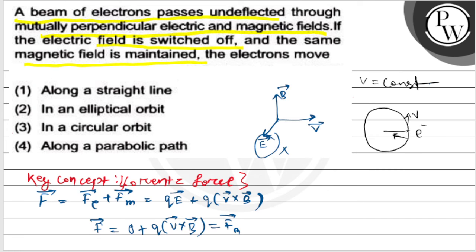So the electron moves in a circular orbit, and this is the velocity of the electron. So the electron moves in a circular orbit. Option 3 is the correct answer. Hope you understand it well. Thank you.